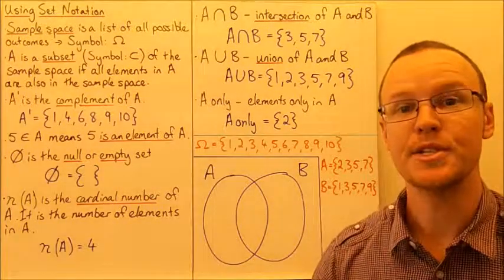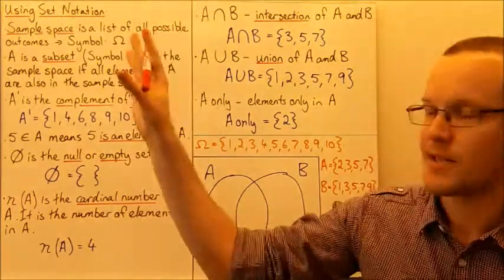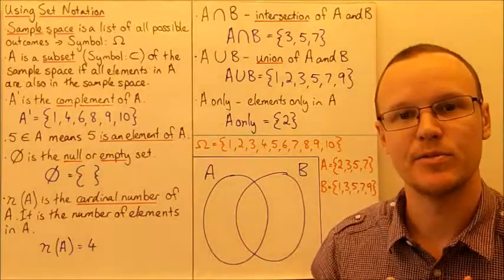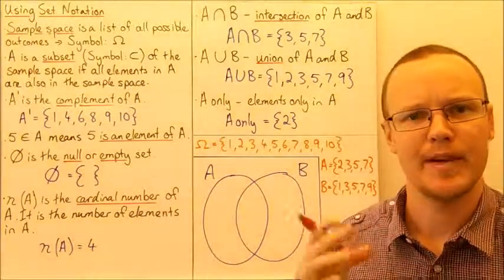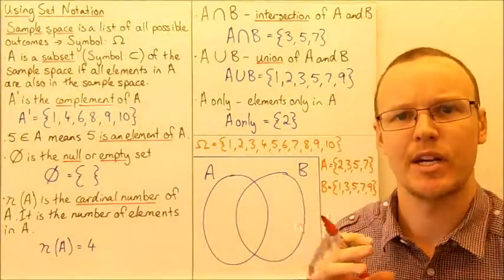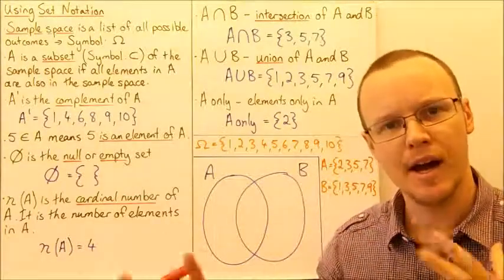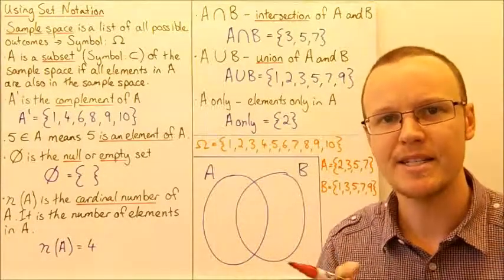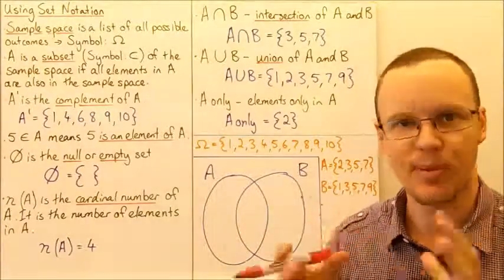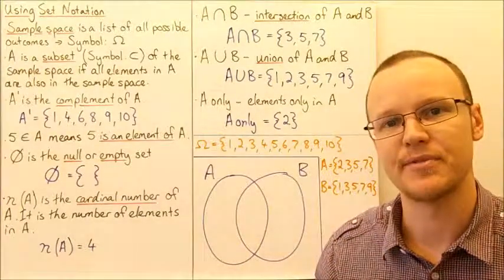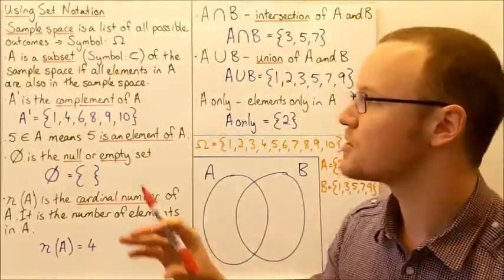Today we're going to be looking at using set notation. Set notation involves any sort of probability, and it's just about learning a bunch of new words, symbols, and definitions that will make it easy for us to communicate different probabilities of things occurring when we have two or more outcomes.